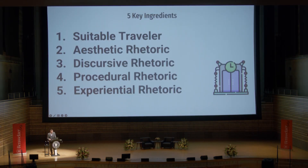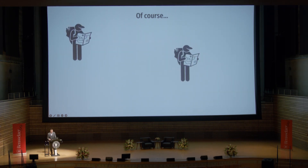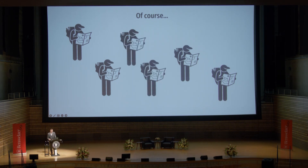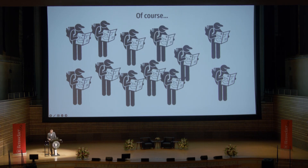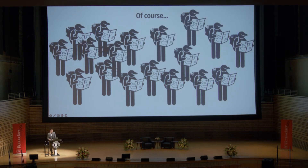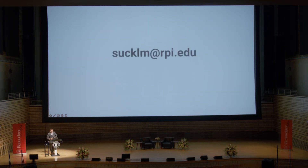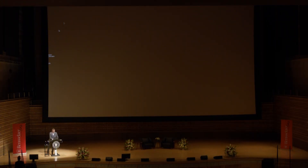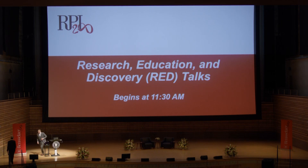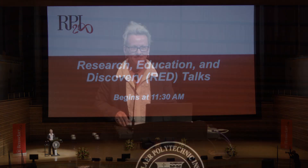So that's it. You need just five things: a suitable traveler, aesthetic rhetoric, discursive rhetoric, procedural rhetoric, and experiential rhetoric. And of course, if omnidirectional time travel from any point in time to any other point in time is ever going to be possible at any point in the future, then time travelers are already with us — which is why I waved to myself over there at the beginning of the talk, but I've gone now. Thank you very much. I told you we had amazing faculty. Thank you very much, Dr. Suckling. Amazing.